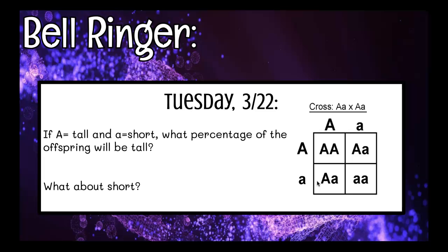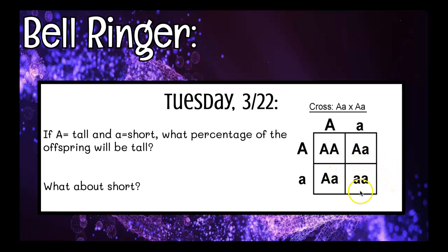If you're looking for the amount of offspring that would be short, short is the recessive trait, so little a. The only way to get a recessive trait is if you have two of them side by side, and only one out of four of our boxes have that, so that is 25%.